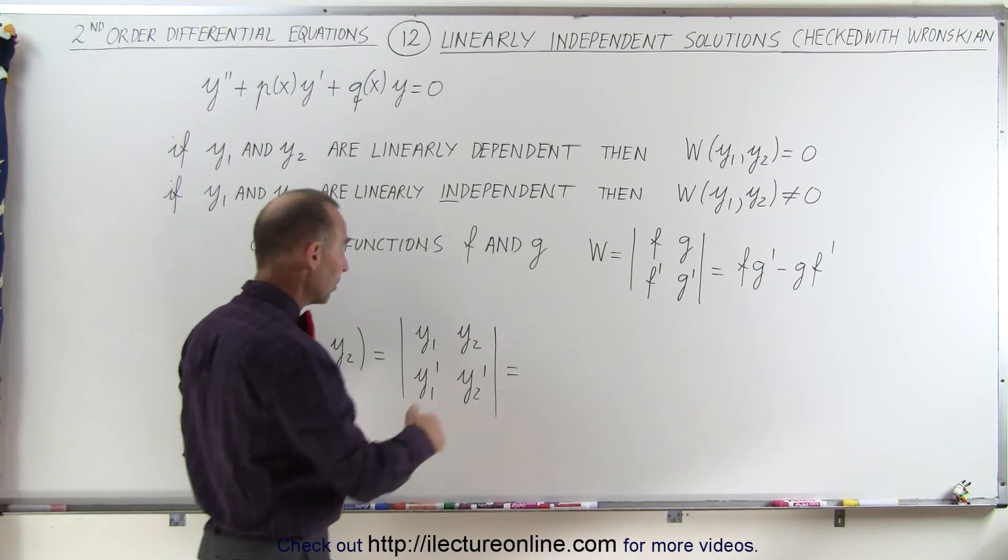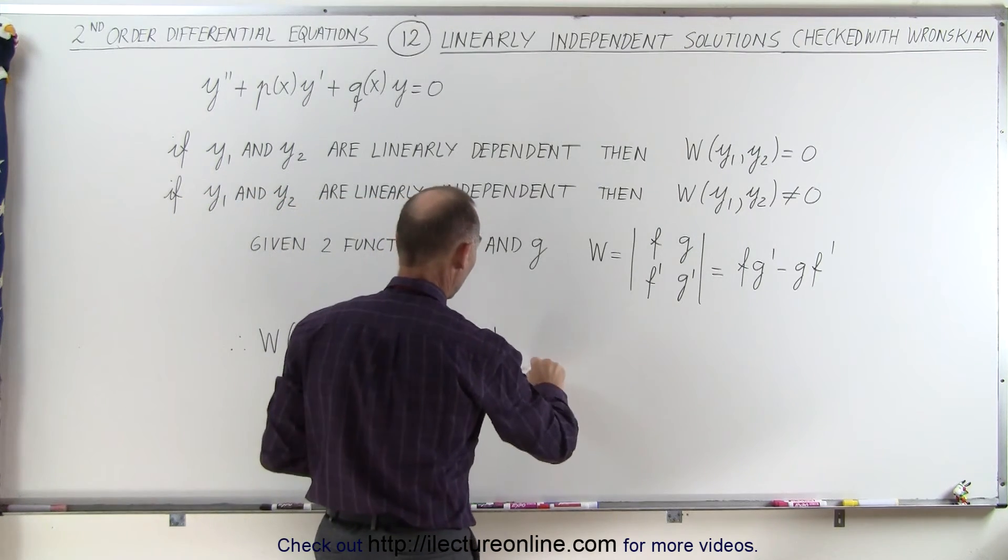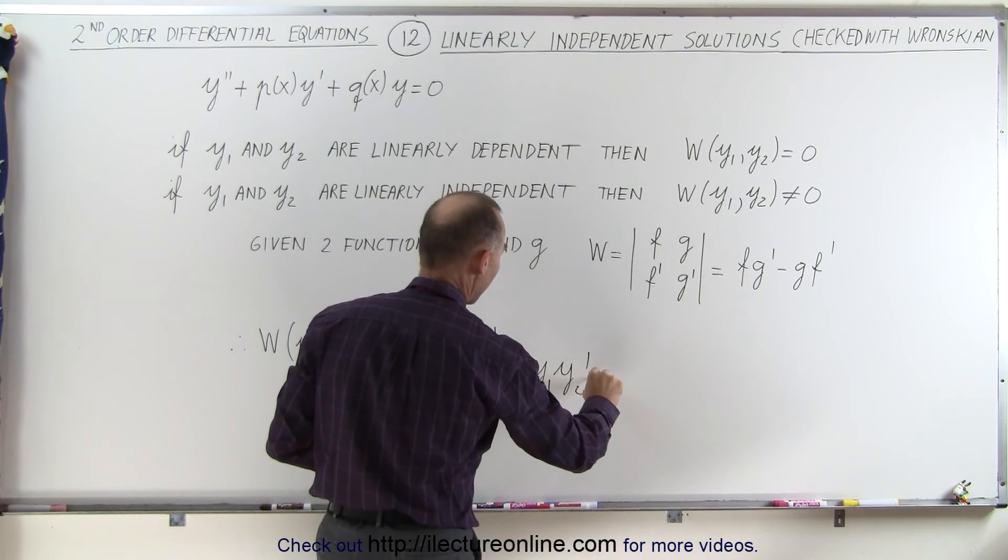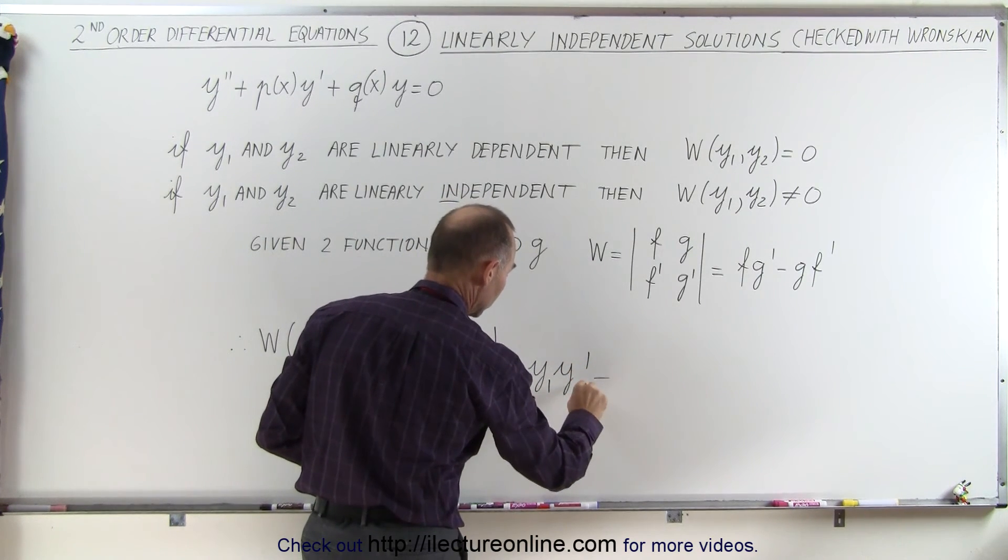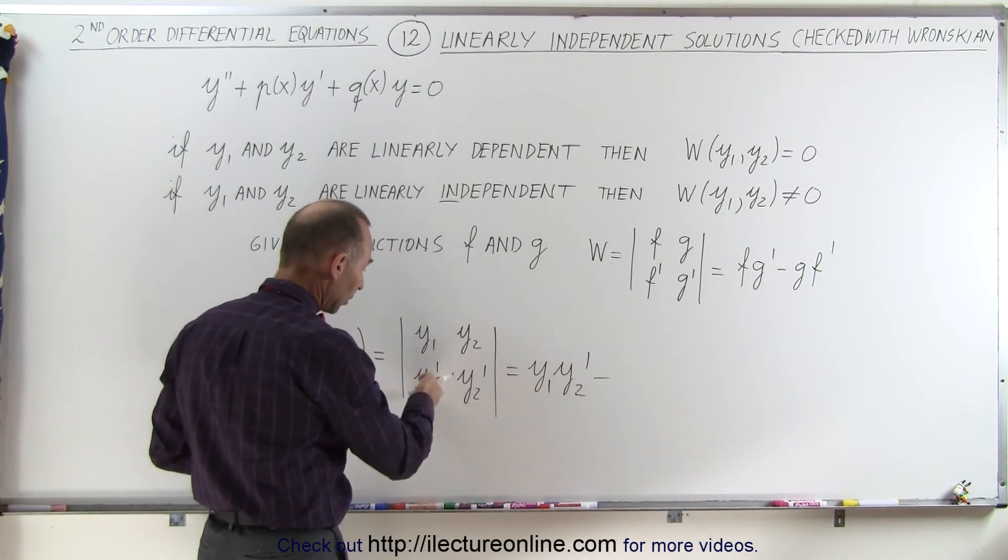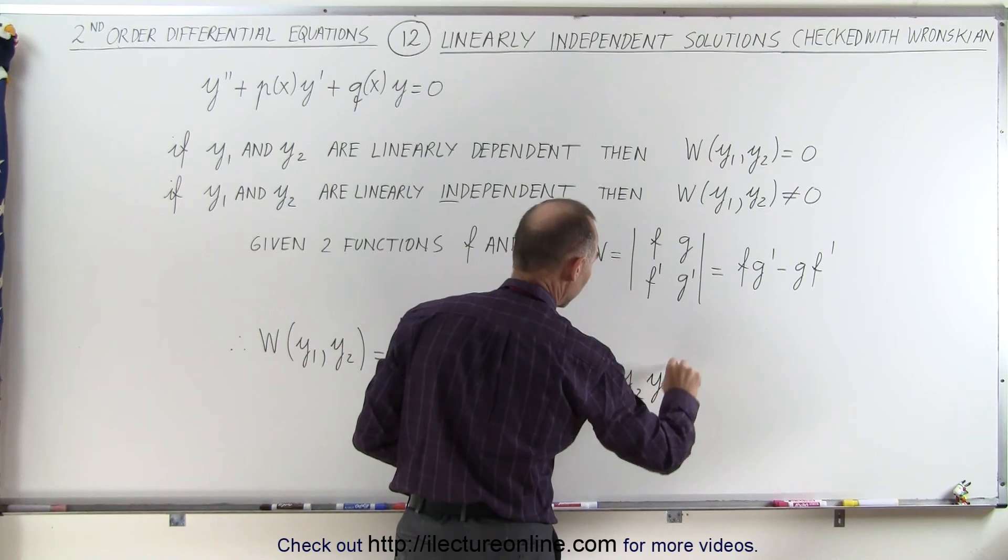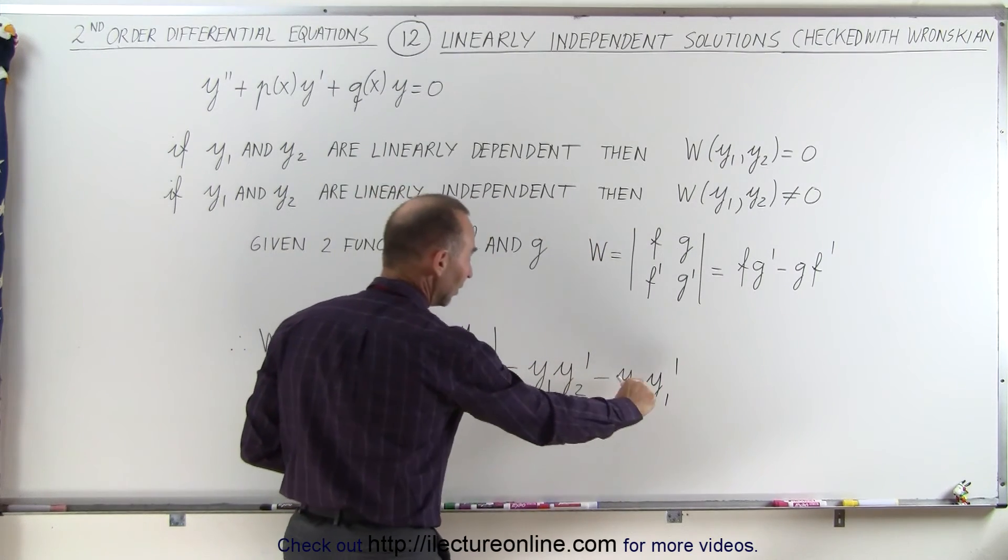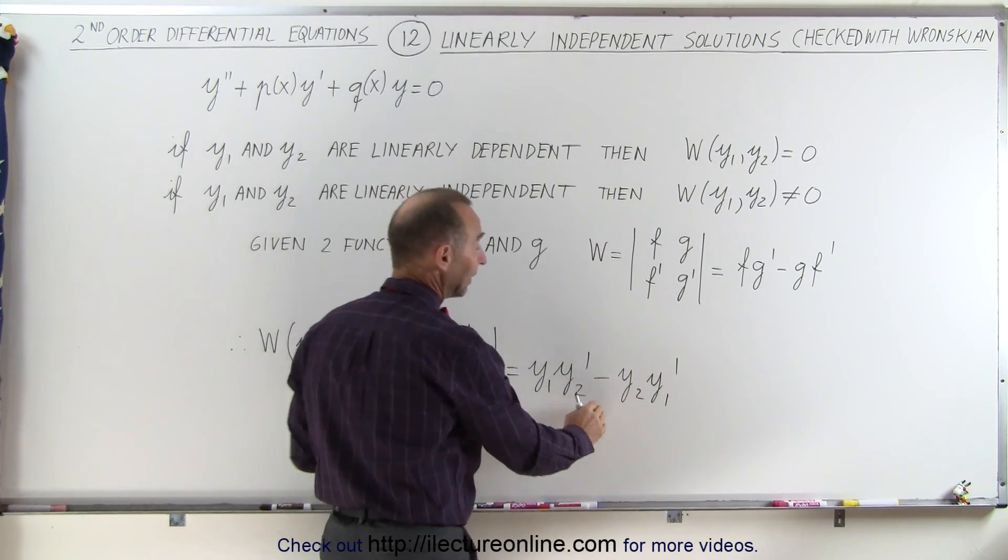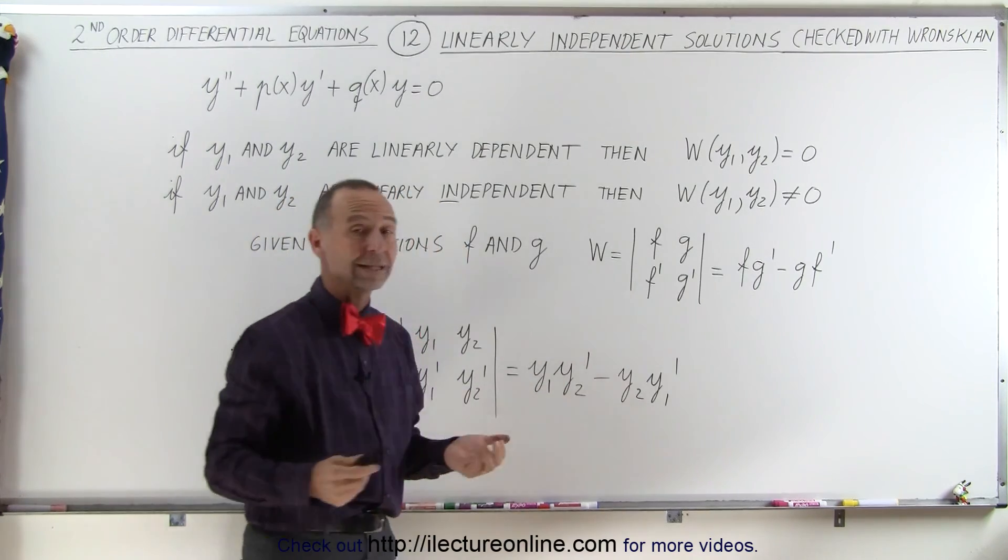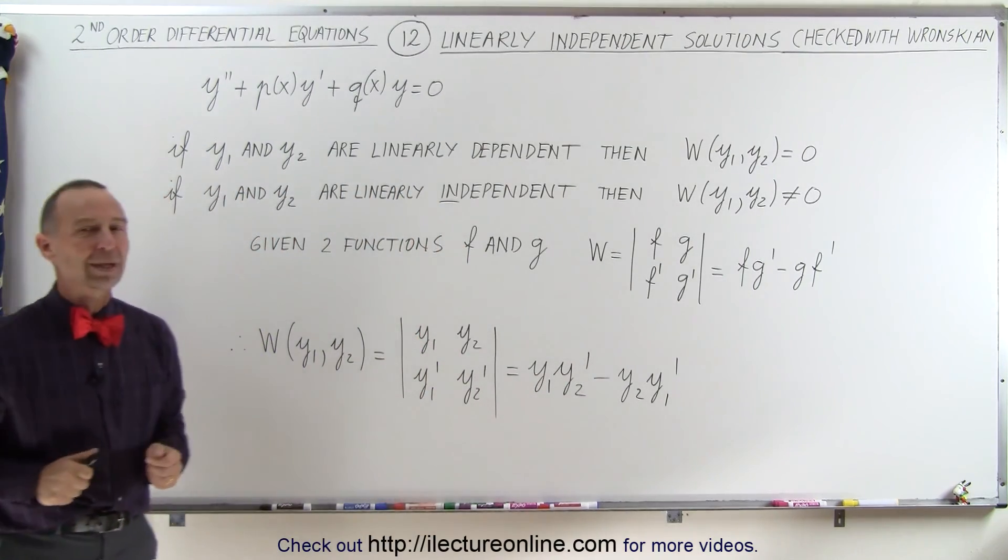That would be the product of those two, which is y1 times y2 prime minus y2 times y1 prime. If this is equal to zero, then they're linearly dependent. If it's not equal to zero, then they're linearly independent, and that's how we can tell the difference.